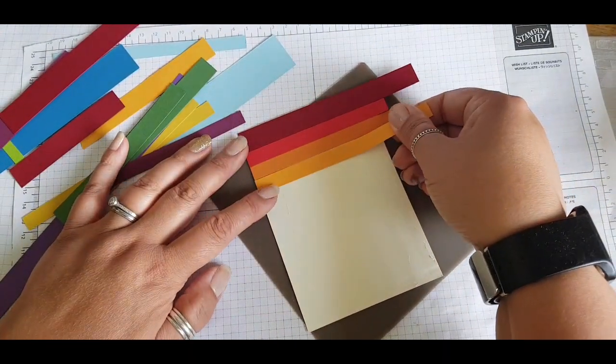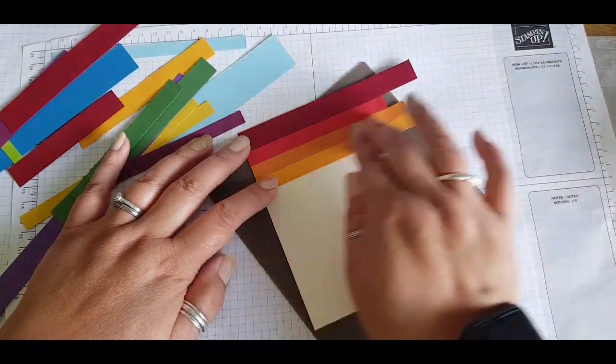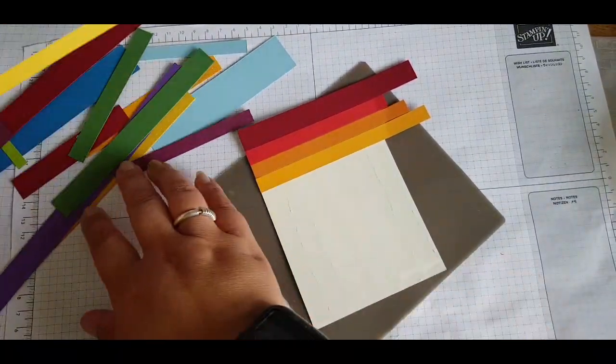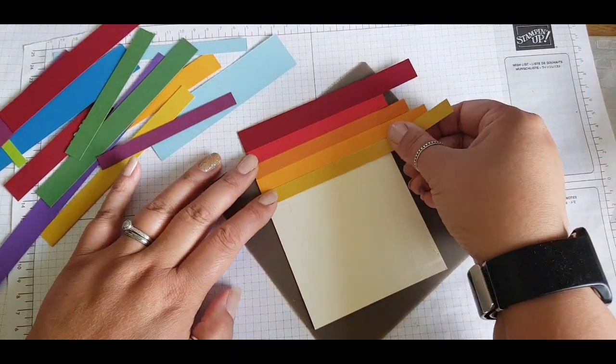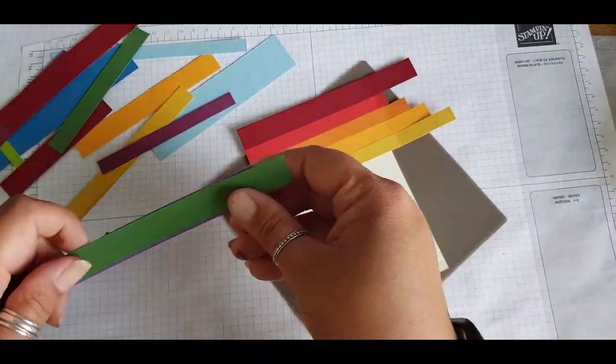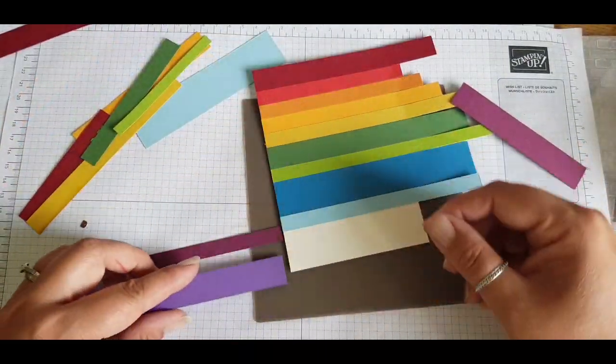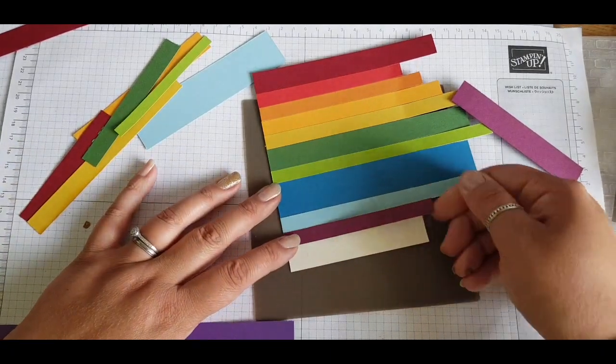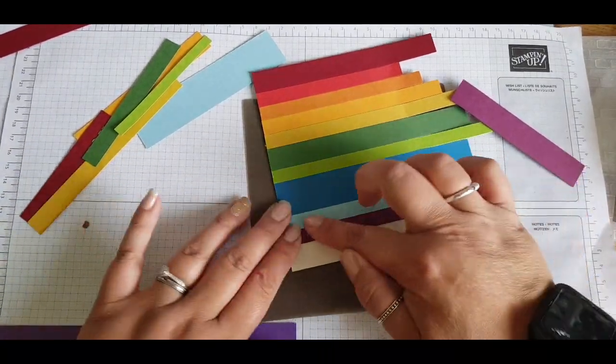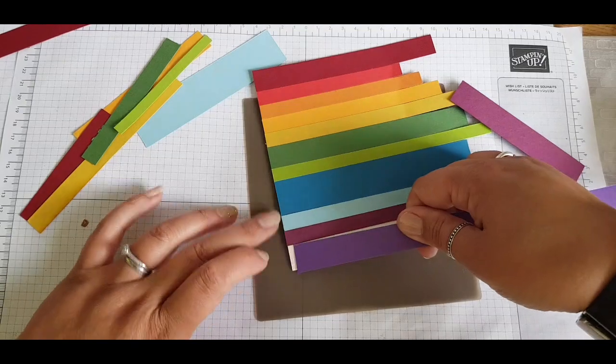Laying these colors in a rainbow order, and I quite like the fact that they give a different look having shorter ones and larger strips. Just checking that I've got enough space at the bottom there to fit the purple ones at the base.